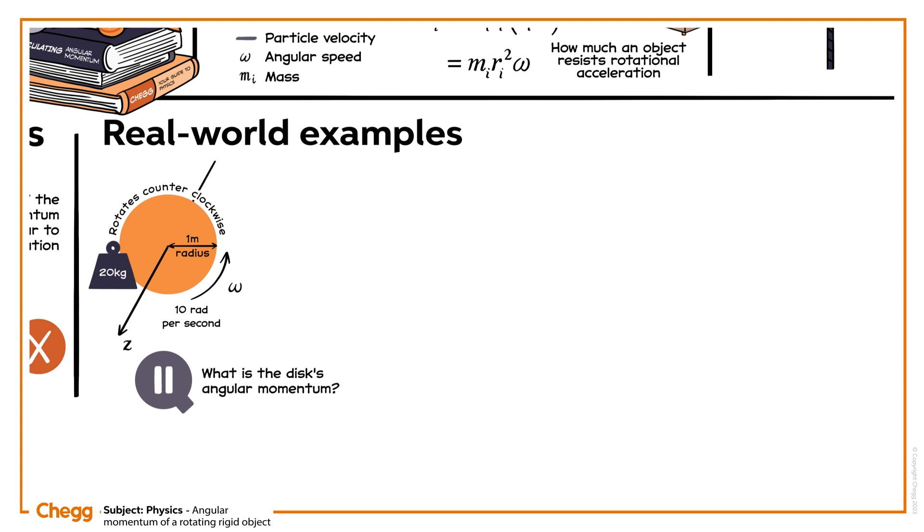A disc is one of the most common shapes for a rigid object. As we learned, its moment of inertia can be calculated using the formula I equals a half times M times R squared. So we've calculated the moment of inertia as 10 kilogram meter squared per second.